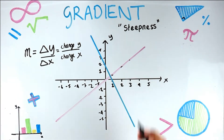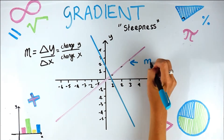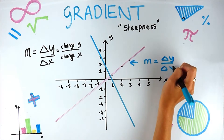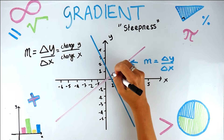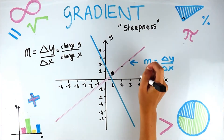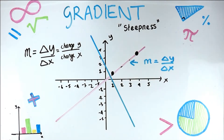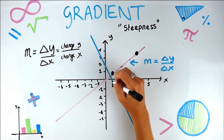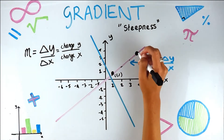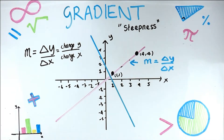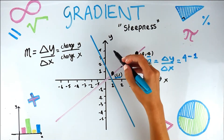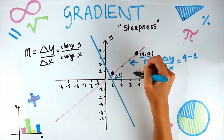Using this formula we're going to work out the gradient of a line. We have m equals delta y over delta x. We can't have a change in something if we've only got one point, so we're going to take two points on the line. This point has coordinate (1, 1) and this one here is (4, 4). Now I need to work out the change in y over the change in x, so we've gone from four take away one.